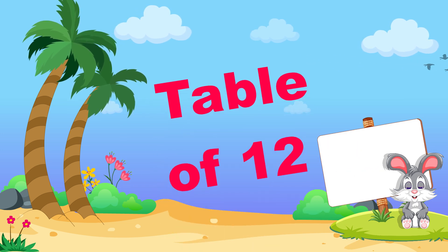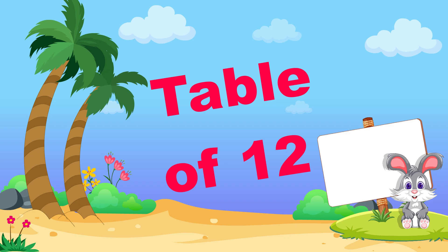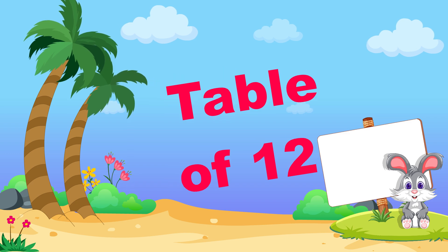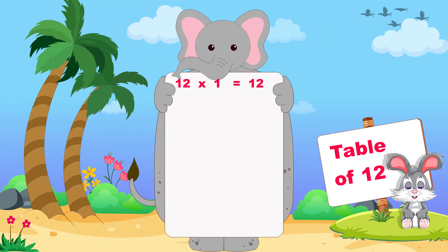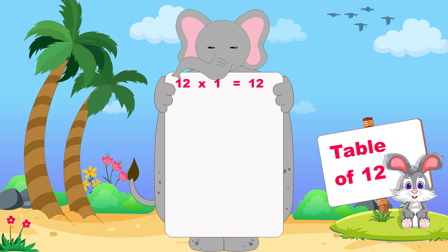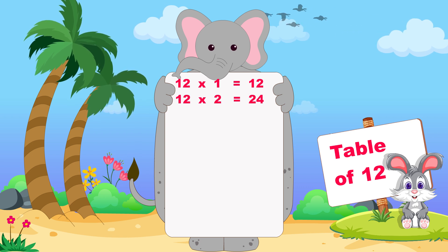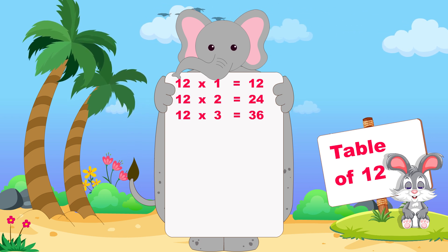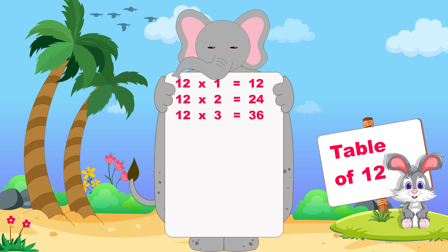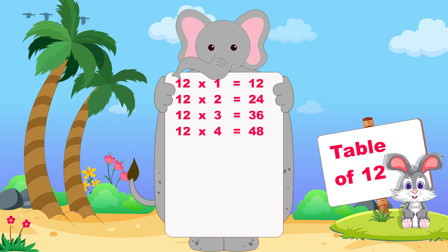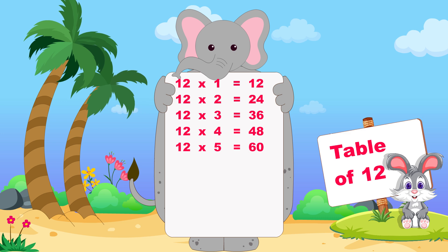Let's learn now table of twelve. Twelve ones are twelve, twelve twos are twenty-four, twelve threes are thirty-six, twelve fours are forty-eight, twelve fives are sixty.